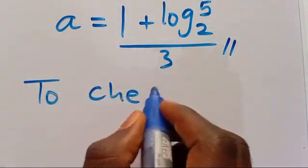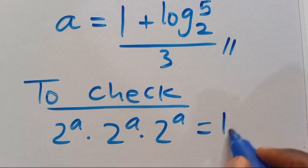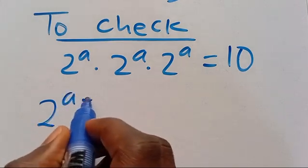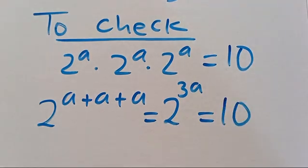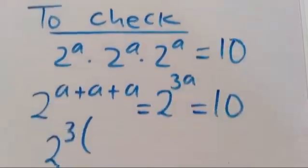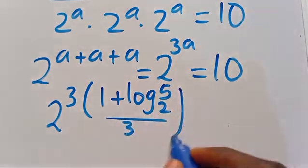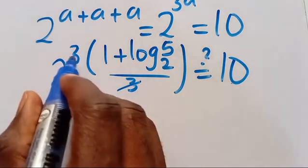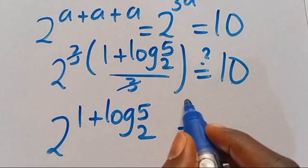For the check: recall we have 2 to the power of a, multiplied by 2 to the power of a, multiplied by 2 to the power of a, equals 10. We simplified this to 2 to the power of 3a, which equals 10. Now substitute the value of a: we have 2 to the power of 3 times (1 plus log₂5) divided by 3. The 3 cancels, leaving us with 2 to the power of (1 plus log₂5). The question is: does this give us 10?